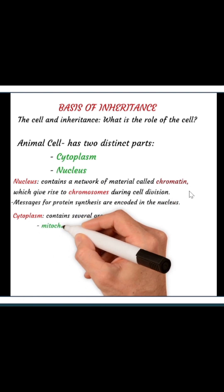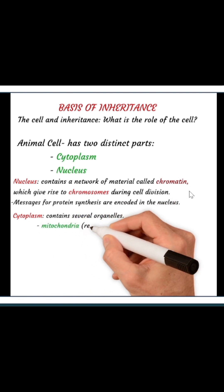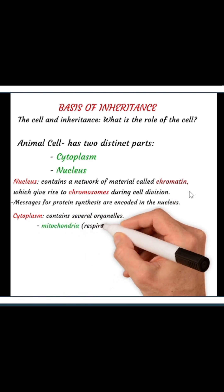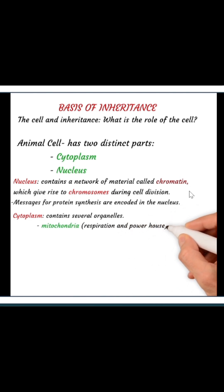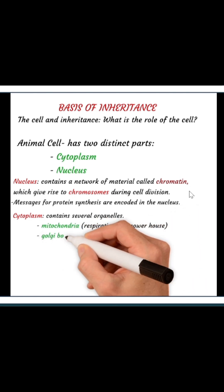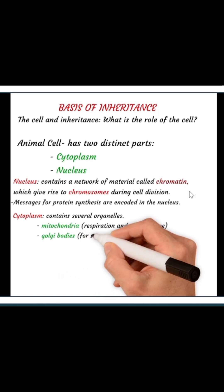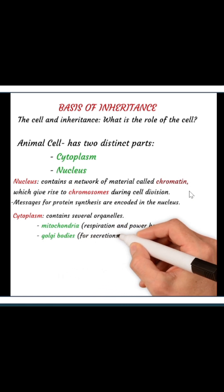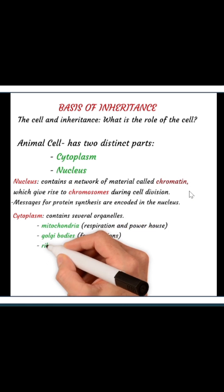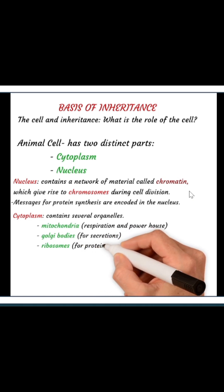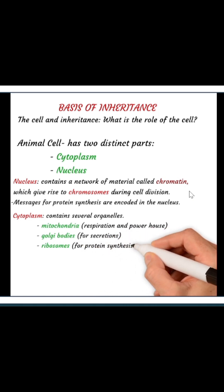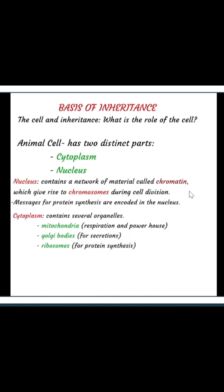Such organelles like the mitochondria, which is responsible for respiration and is also the powerhouse of the cell — the source of energy. We have the Golgi bodies, which are responsible for secretion. Then we have the ribosome, which is where proteins are synthesized. Each organelle inside the cytoplasm of the cell has a specific function that it plays.